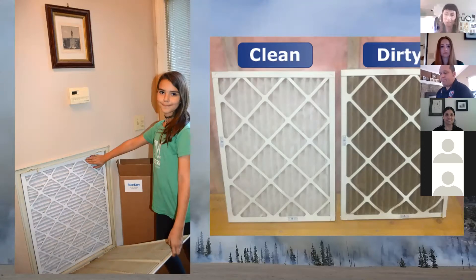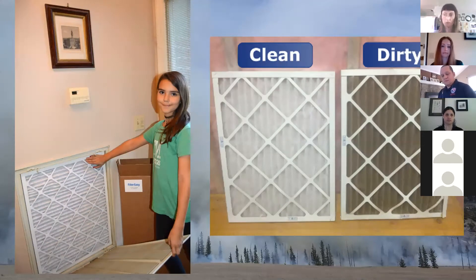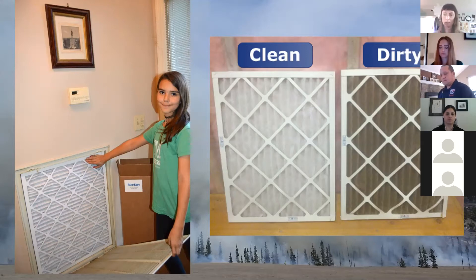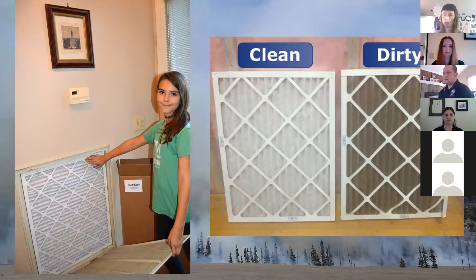The Paradise fire provided important lessons: many people forgot to turn their air to recirculate while evacuating, causing their cars to fill with smoke. Thinking about your evacuation procedures and how to protect yourself from smoke during evacuation is an often-overlooked part of preparedness. The EPA wildfire smoke toolkit on their site also has really great guidance on indoor air quality and is a great place to start planning.